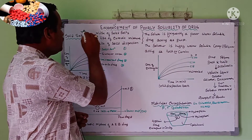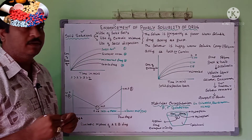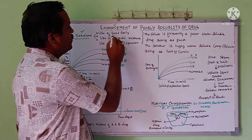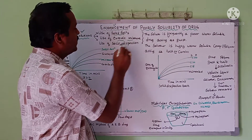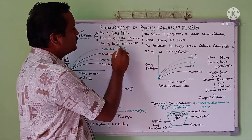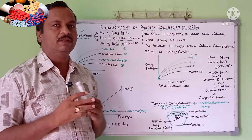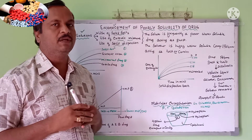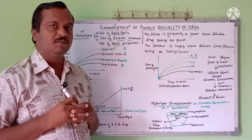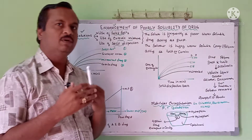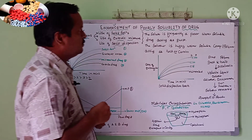The first method is the solid solution. In that method, we have: use of solid solution, use of eutectic mixture, and use of solid dispersion. These are the three different methods which are commonly employed nowadays in the pharmaceutical field to enhance the poorly solubility of the drug.